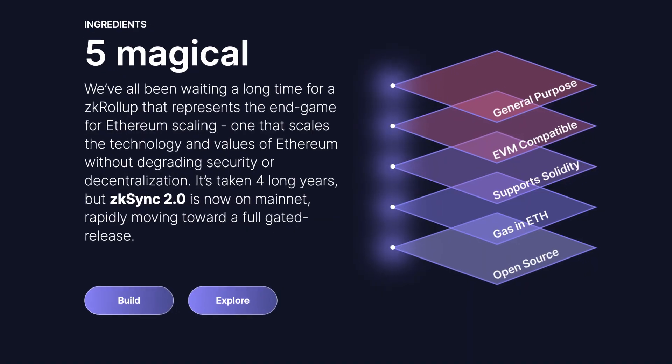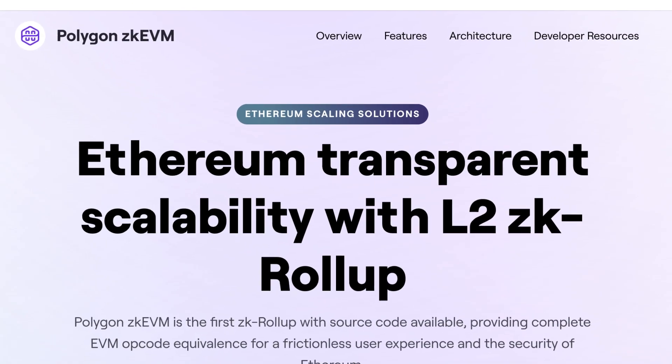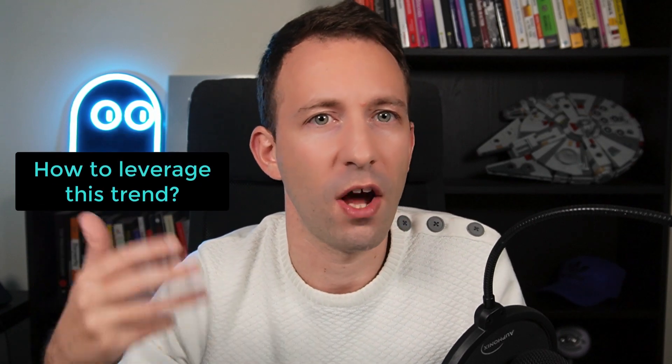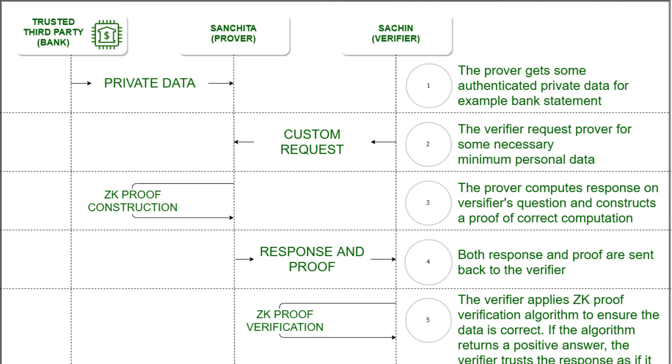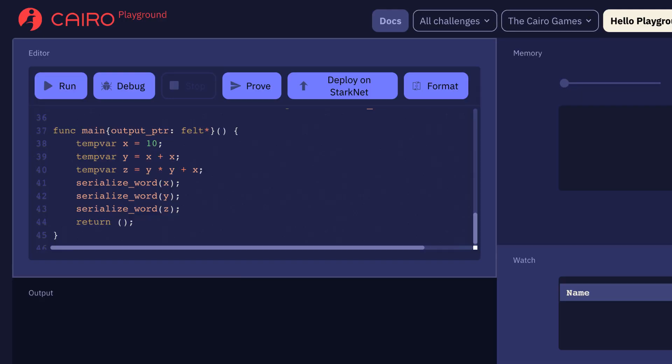Then another big advance was made: third-generation zero knowledge blockchains. They are also general purpose like the second generation, but they are compatible with the EVM, which means developers can reuse all the tooling of Ethereum smart contracts, such as Solidity. At the moment we have two examples of EVM-compatible zero knowledge blockchains: ZK Sync 2 and Polygon ZK EVM, with both coming online in the next few months. To leverage this trend, you first have to study how zero knowledge proof works — no need to go deep into the math, but understand it at a high level. Then you can study different implementations and learn how to create and deploy smart contracts on them. For second-generation chains like ZK Sync 1, you'll need to learn a custom programming language, but for third-generation chains like ZK Sync 2, you can get up and running fast since they are EVM compatible.